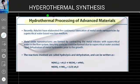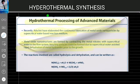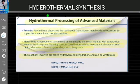Researchers have developed continuous fabrication of metal oxide nanoparticles using a supercritical water-based reaction medium. Metal oxide nanostructures are formed by reacting metal nitrates with supercritical water in a flow system. Very tiny particles can be formed due to supercritical water-assisted rapid dehydration of metal hydroxide prior to growth. The reactions involved are hydrolysis and dehydration, written as: M(NO₃)₂ + xH₂O → M(OH)₂ + xH₂O, and M(OH)x → MOx/2 + (x/2)H₂O.